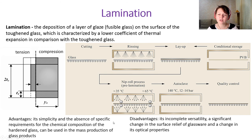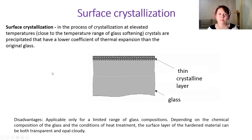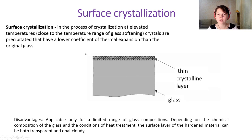The main disadvantage of lamination is its incomplete versatility, a significant change in the surface relief of glassware, and a change in optical properties. Surface crystallization is the process of crystallization at elevated temperatures of crystals that have a lower coefficient of thermal expansion than the original glass, resulting in a thin crystalline layer on the glass surface. Its main disadvantage is that it is applicable only for a limited range of glass compositions and strongly depends on chemical composition and heat treatment conditions.